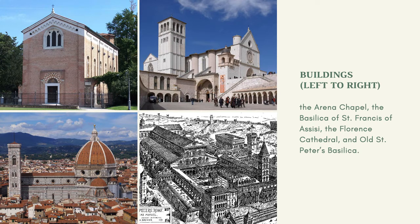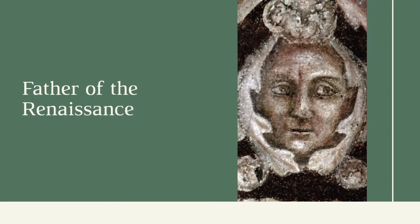Around 1290, Giotto was married to a woman named Recipia di Lapo da Pele. Together they had eight children — four sons and four daughters — and one of these sons would follow in his father's footsteps to become an artist. Giotto's name is attached to some of the most famous buildings of the medieval era, including the Arena Chapel, the Basilica of St. Francis of Assisi, the Florence Cathedral, and Old St. Peter's Basilica. Giotto di Bondone died on January 8, 1337, and most sources agree he was buried in the Florence Cathedral, both because he worked on the project and because he was one of the most beloved citizens of this art-oriented town.